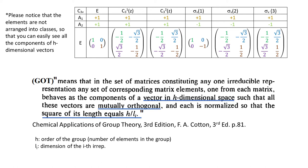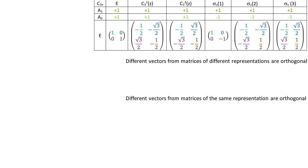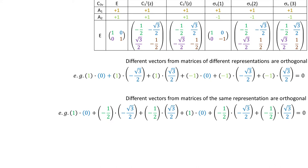Let's test it. GOT states that any two vectors from the table are orthogonal. Let's break it into two subcategories. Different vectors from matrices of different representations and different vectors from matrices of the same representation. Now let's take some example vectors and test it out. In the first case I dotted A2 with a blue vector from EREP and in the second case I took two vectors from EREP. And obviously they are orthogonal.